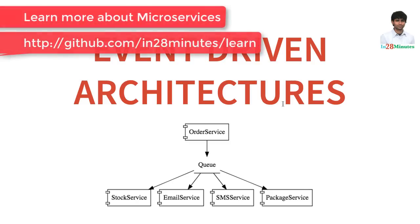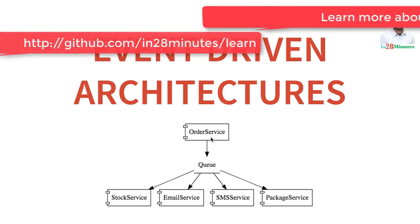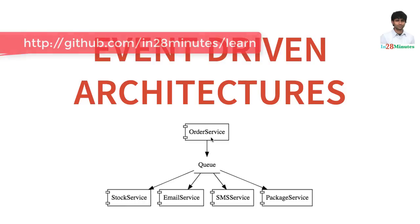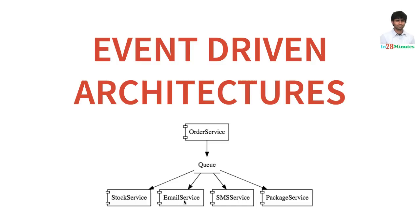Let's consider a simple example. We have an order service — a customer places an order through the order service. What are the things that we would want to do when we receive an order? We would want to update the stock, send an email to the customer, send an SMS to the customer, as well as start informing the packaging and delivery team. Those are the important features that you would want to accomplish.